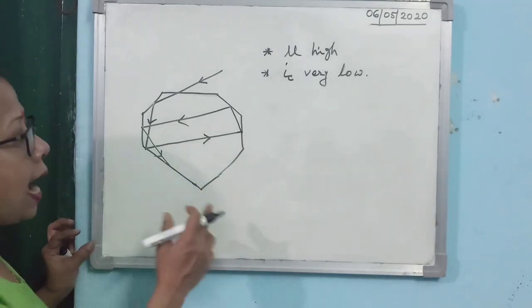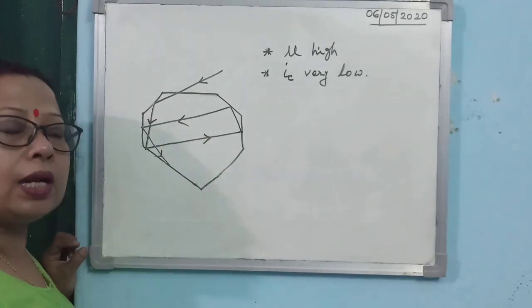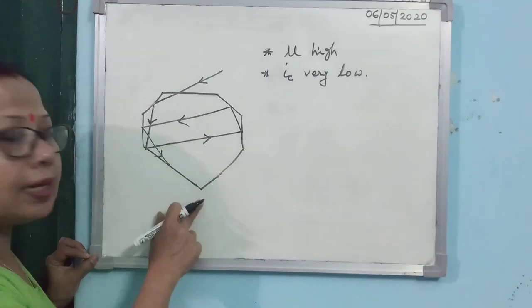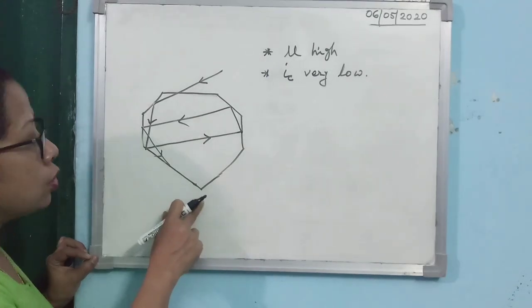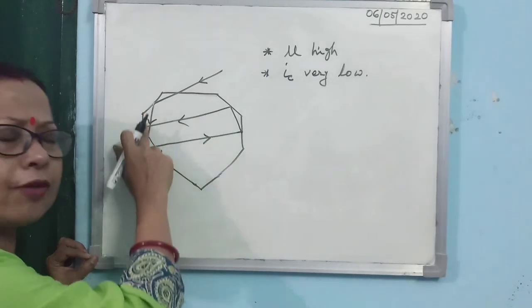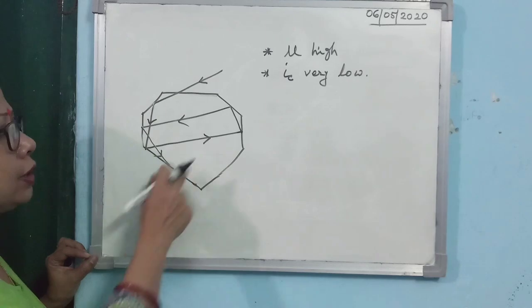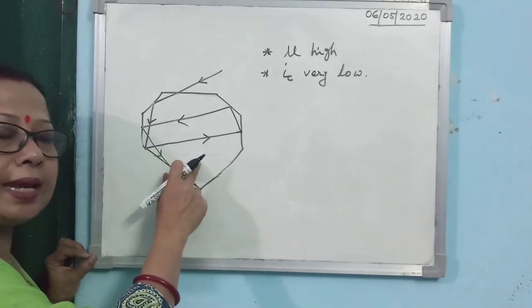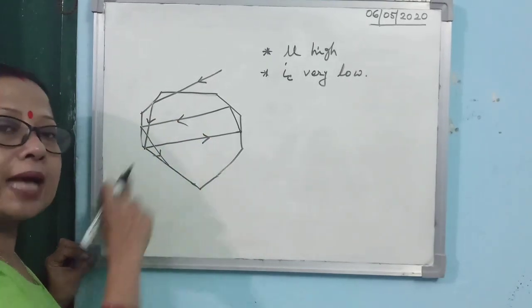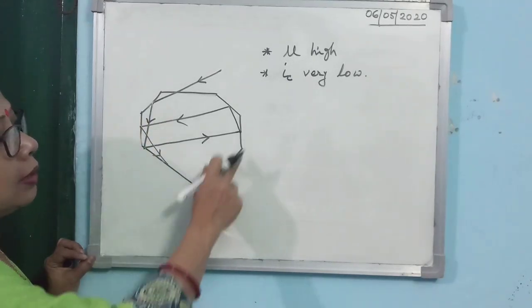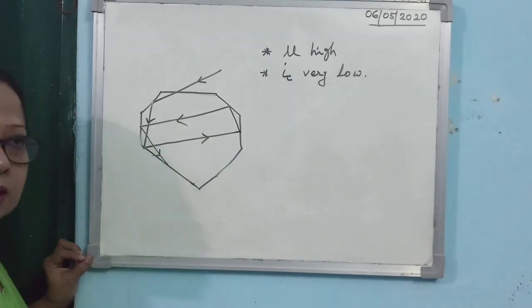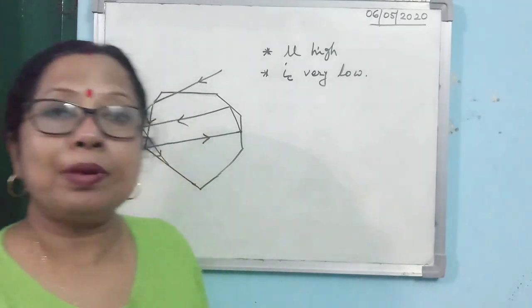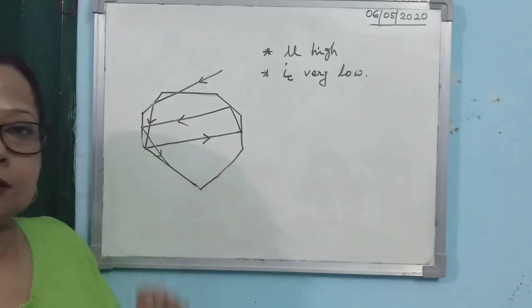In total internal reflection, no light is absorbed by the reflecting surface. So the light suffers several total internal reflections within the diamond piece and remains entrapped within it. As a result, the diamond sparkles — this is the brilliance of diamond.